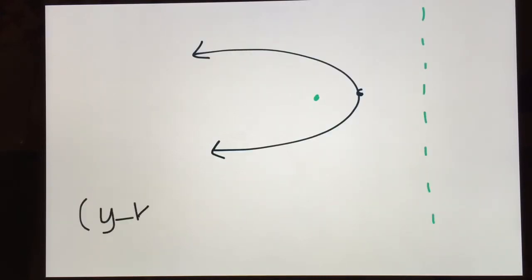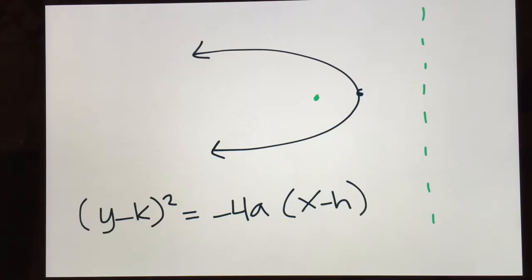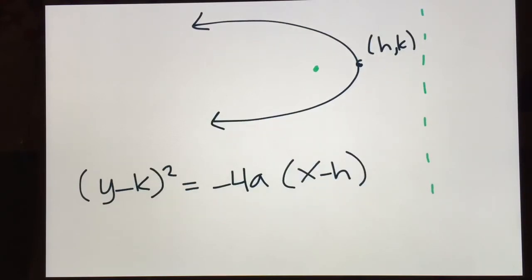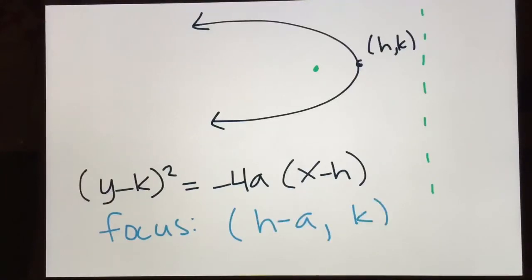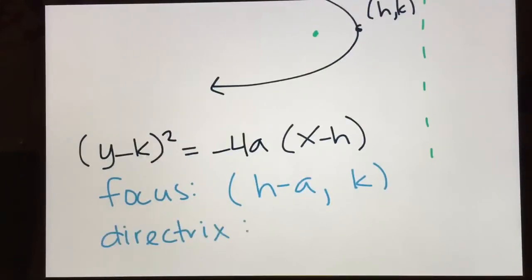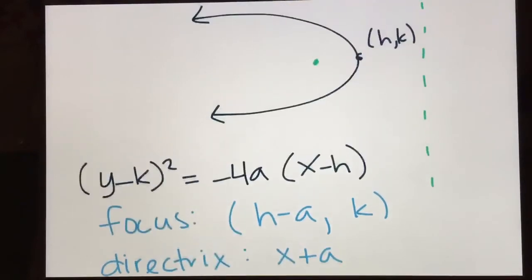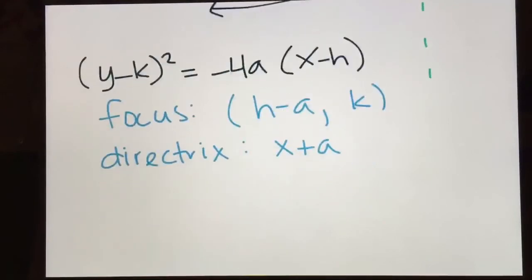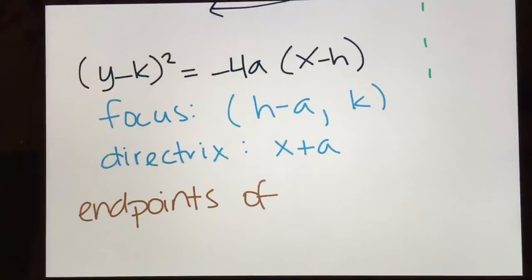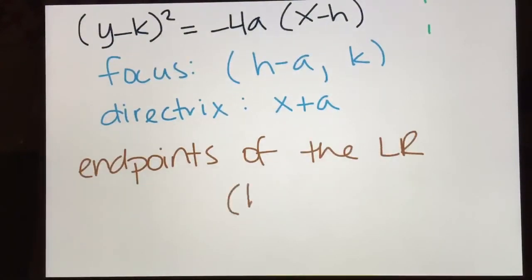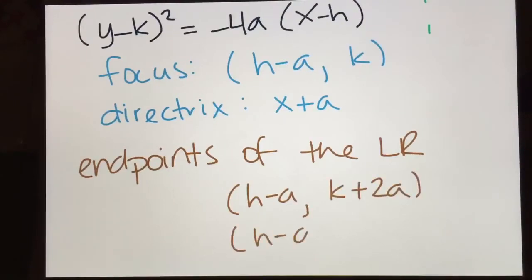Last but not least, we have a parabola opening to the left. This one has a negative in the equation, and that's what tells you it goes to the left. Our vertex is (h, k). The focus has the same y-coordinate, but the x-coordinate has moved to the left, so the focus is (h − a, k). For the directrix, it's still a vertical line x equals a number, and h has moved to the right a length of a, so x = h + a. For the endpoints of the latus rectum, take the focus and move it up 2a and down 2a.